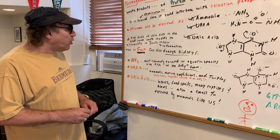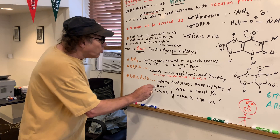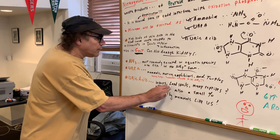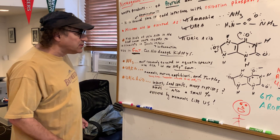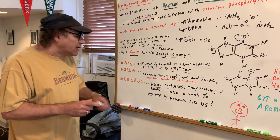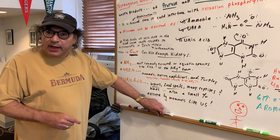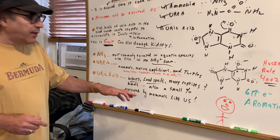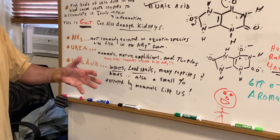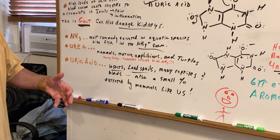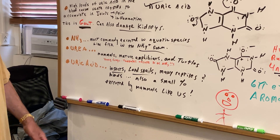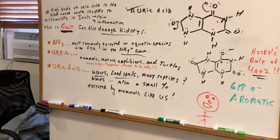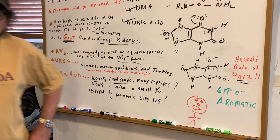Finally, uric acid is found in insects, land snails, many reptiles, and birds. Also, a small percent in mammals like us would be uric acid from purine metabolism of nucleic acids.